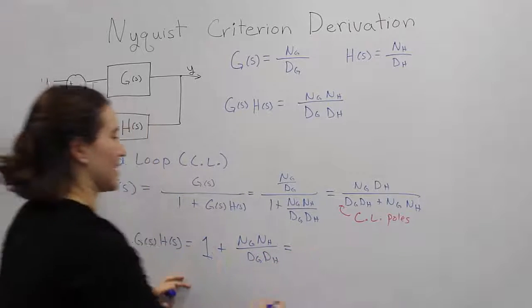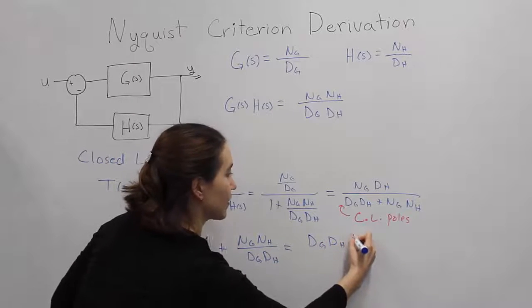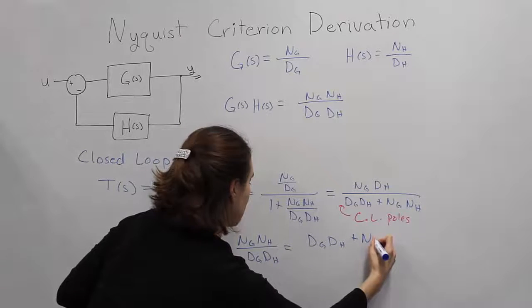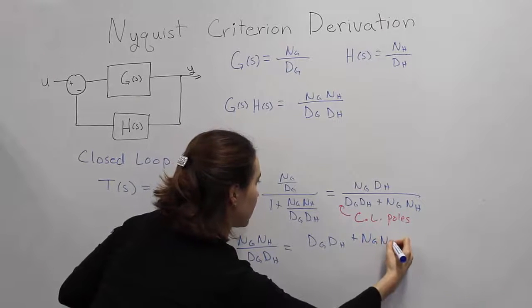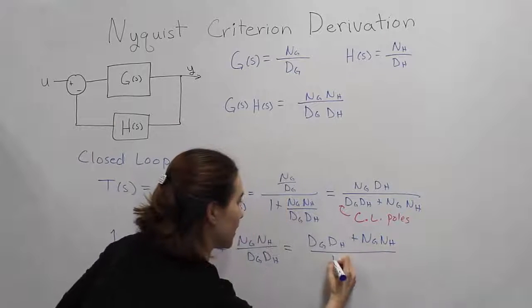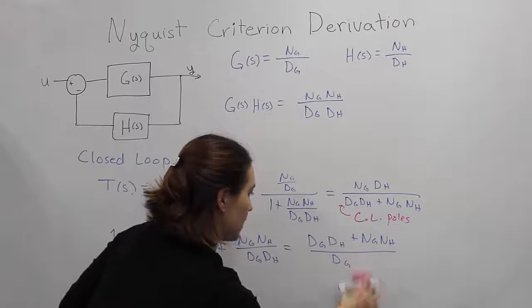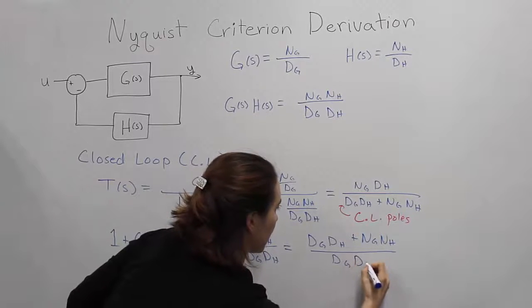So we can rewrite this as dG, dH, the two denominators, plus nG, nH, the two numerators of the open-loop, divided by dG, dH, dH.